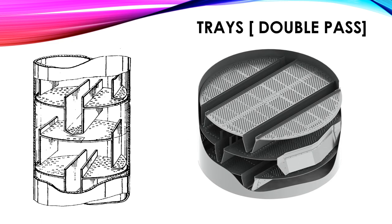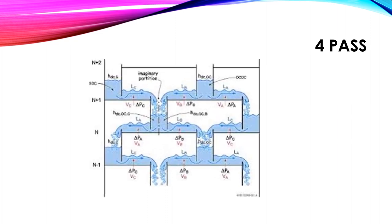This figure shows a double pass arrangement of a valve tray; the second figure is a high capacity valve tray. This is a four pass arrangement of valve trays.